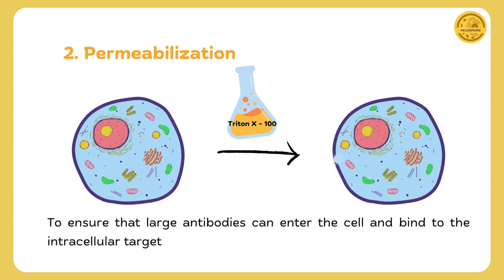Next up is permeabilization. We use detergents like Triton X or saponin to create small pores in the cell membrane. This step is like opening a door to let the antibodies inside the cell, where they can reach and bind to the proteins of interest.